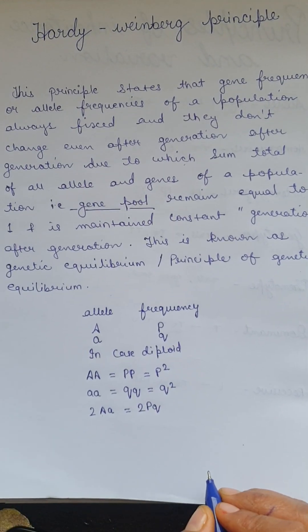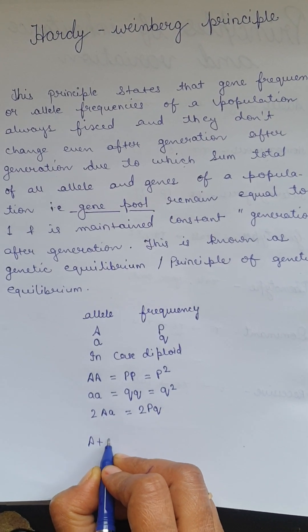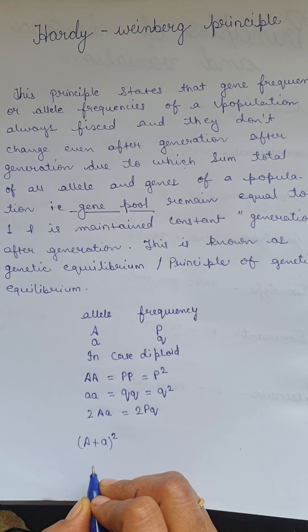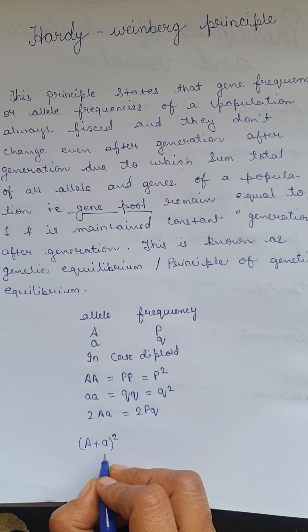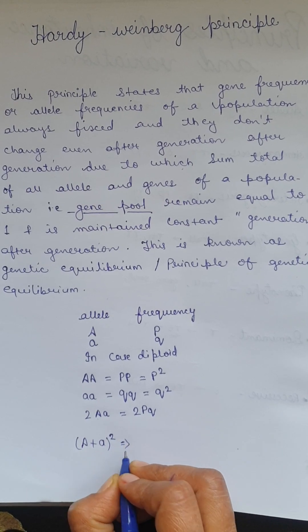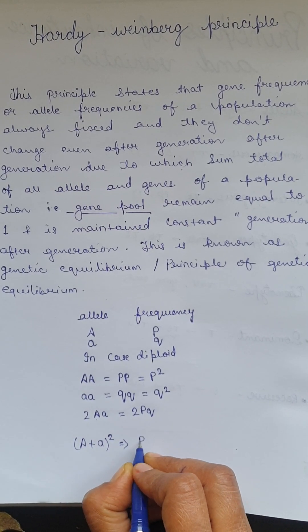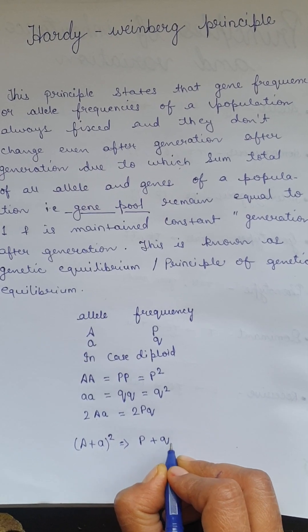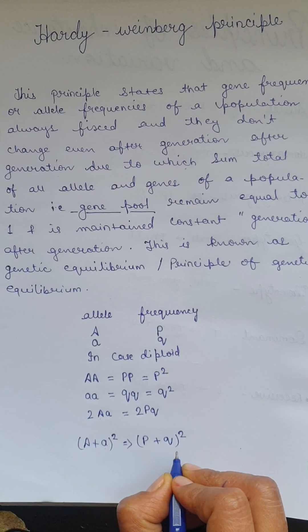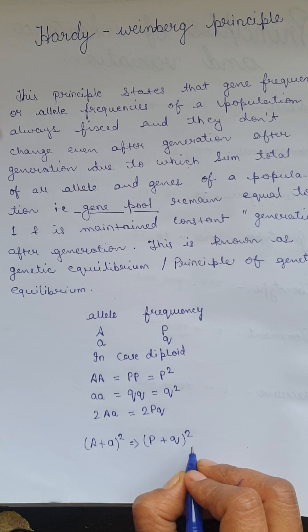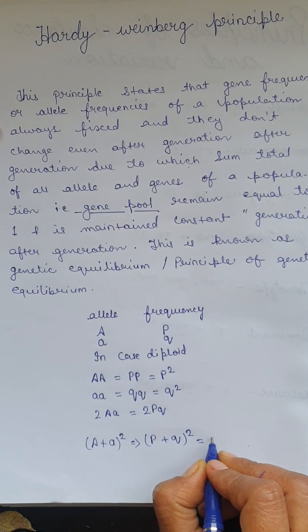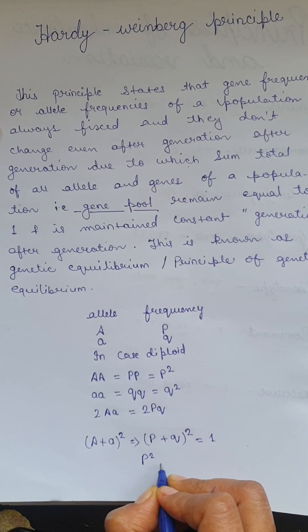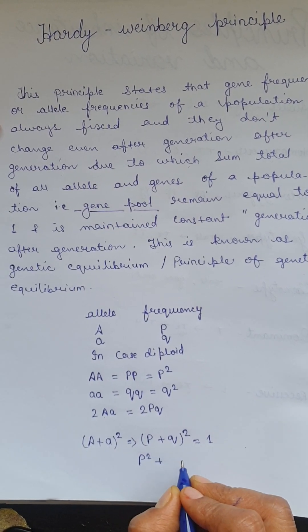In the next stage, we use the mathematical equation of (A+B) whole squared. In place of A we write P, and in place of B we write Q, then square the whole expression — it is equal to 1. Expanding using the formula: P squared plus Q squared plus 2PQ equals 1.